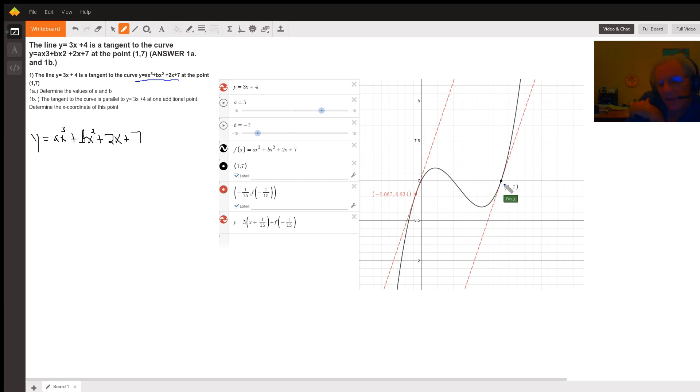And what the problem is saying is that the line y equals 3x plus 4, which is this red dashed line right here, which obviously does pass through the point (1,7), is tangent to this curve. At the point (1,7), and there's some other point on the curve that has a tangent line that's parallel to this one.